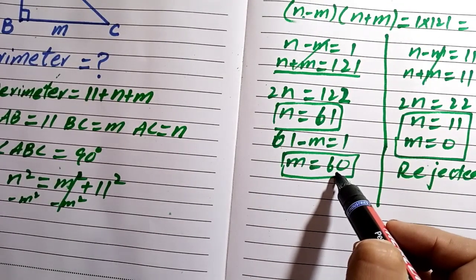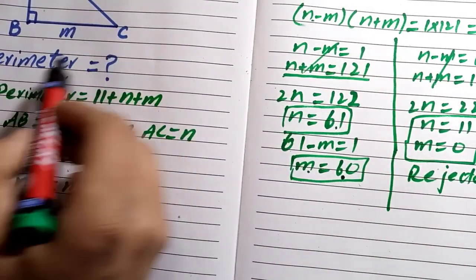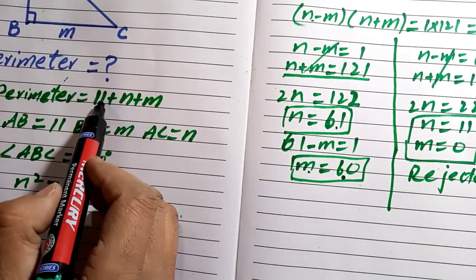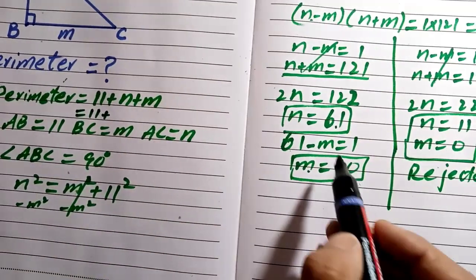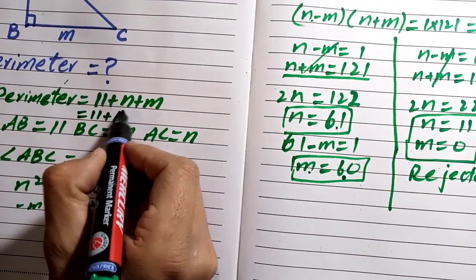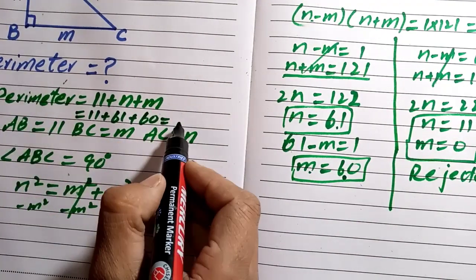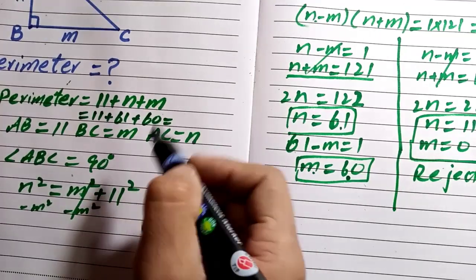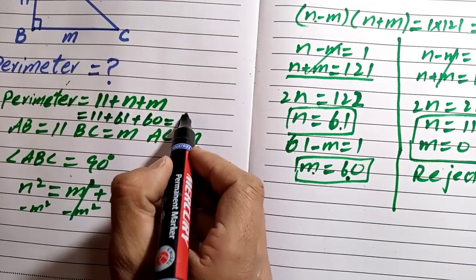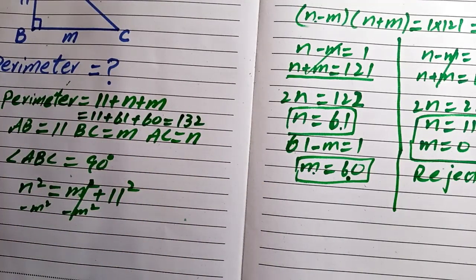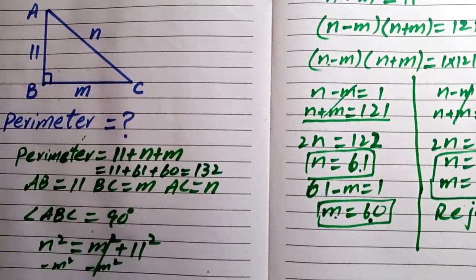So the valid values are n equals 61 and m equals 60. The perimeter equals 11 plus n plus m, which is 11 plus 61 plus 60, giving a total perimeter of 132. This is our final answer.